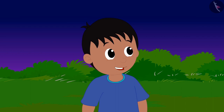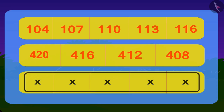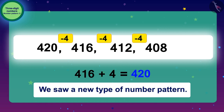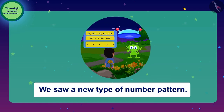Raju told the answer of the code to the alien, and the alien showed his third and last code. Children, today we saw a new type of number pattern. In the next video, we will try our best to save Babloo from the alien using our knowledge of number patterns.